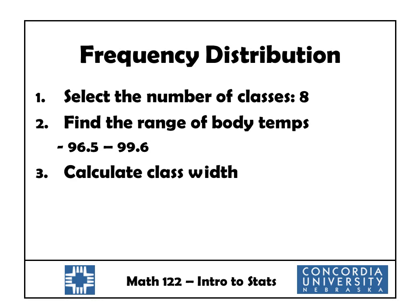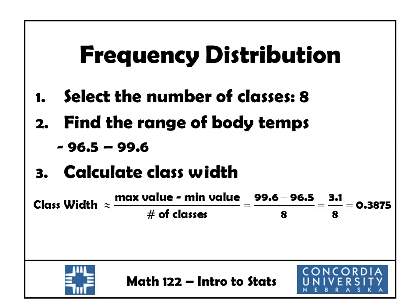The third step is we calculate what's called the class width, which is the width of each one of those subintervals or classes or bins. The basic idea is that we take the maximum value minus the minimum value and divide it by the number of classes. We're not going to use that number, 0.3875, as the class width. We're going to round it off to 0.4. So that's our class width.